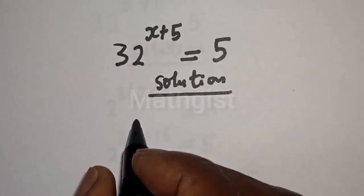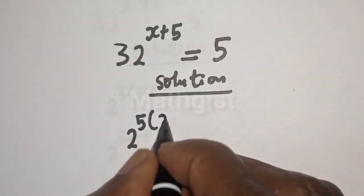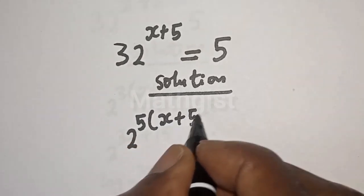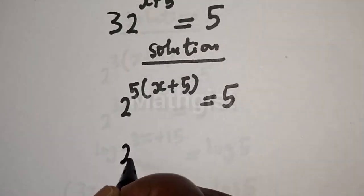32 raised to power s plus 5 can be written as 2 raised to power 5 bracket s plus 5 is equal to 5. Then this is 2 raised to power...